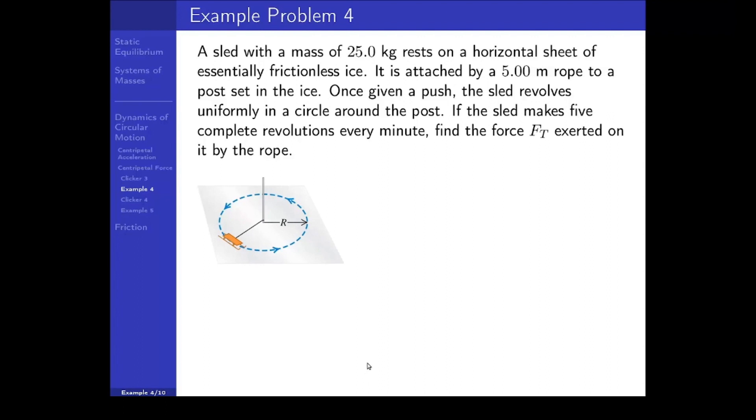We want to find the force exerted on it by the rope. So let's write down everything we know. We know the mass of the sled, 25 kilograms. We know the radius of the circular path, it's the length of the rope, 5 meters. We also know the period of the oscillation because we know that the sled makes 5 revolutions every minute. That means 1 minute it takes to make 5 revolutions. So it takes 12 seconds to make 1 revolution. That is the period of oscillation or period of rotation. We want to find the force exerted on the sled by the rope. We can call it a tension force because this is a rope. And I'm going to call this F sub T for tension force to distinguish it from period.